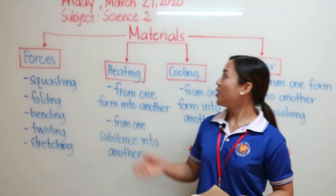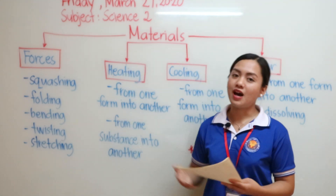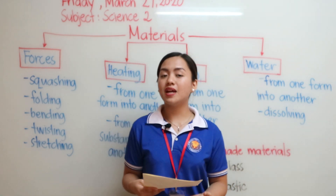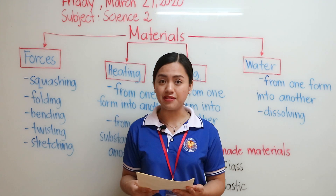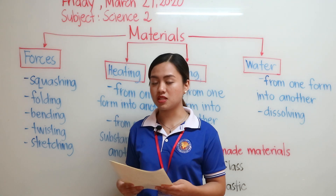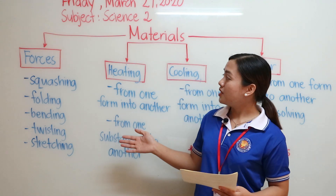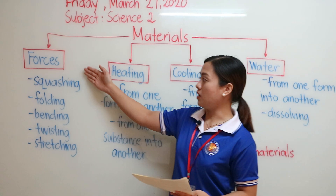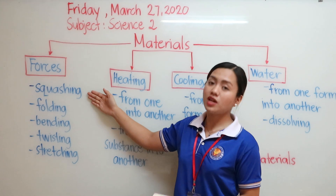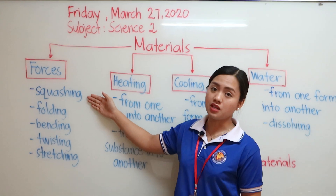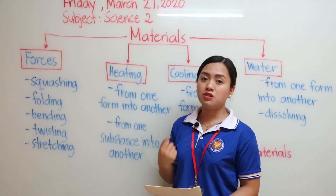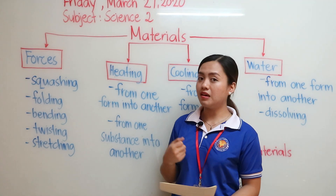Today we are going to talk about materials. Materials are anything that are not alive, and materials can undergo changes. Materials can be changed by forces, such as squashing — for example, a sponge, we can actually squash it, or the dough that we use to bake bread.